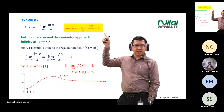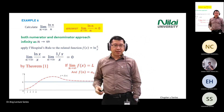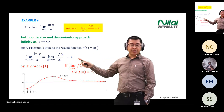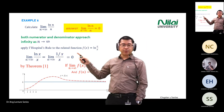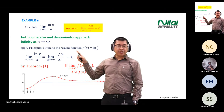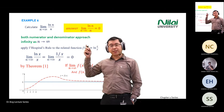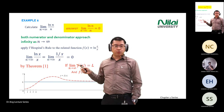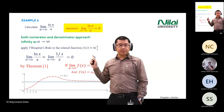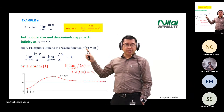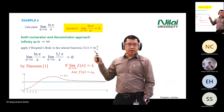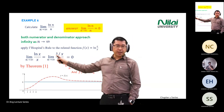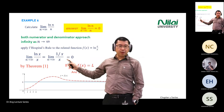The answer is zero. Take some time to process these slides — this is a new concept for today. We are using L'Hôpital's rule to solve this kind of question. L'Hôpital's rule means you use the ln function to solve — you convert ln(x) into one over x.